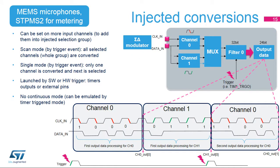Injected conversions have higher priority. They can interrupt regular conversions immediately and start just after being triggered. Any of the input channels can be assigned to an injected channels group. There are two modes: scan mode and single mode. In scan injected mode, all channels from the injected channels group are converted from the lowest to the highest channel number when a trigger occurs. In single injected mode, only one channel from the injected channel group is converted per trigger, and the next channel is selected for the next conversion. Injected conversions can be launched by software or by hardware, from timers or an external pin, and cannot run in continuous mode, but this can be emulated using a periodic timer trigger.